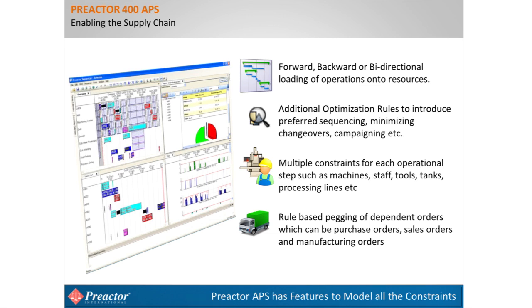There are built-in optimization rules available — such as minimized setups, theory of constraints, and other frequently used methods — but these rules are customizable to meet application requirements. Preactor also deals with multiple constraints: for example, you may require one of three machines, an operator with a specific skill set to set up the machine, and a tool to start. Or tanks used for storage before filling lines may each have different capacity. Another feature is the ability to handle dependent orders, as ERP systems often generate a separate order for each bill-of-materials level. Along with bought-out materials, these must be taken into account in the detailed scheduling process.